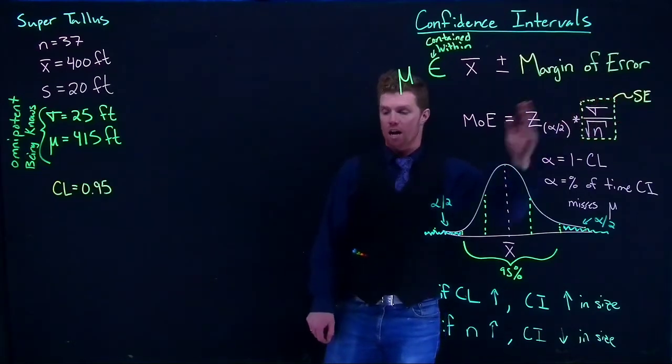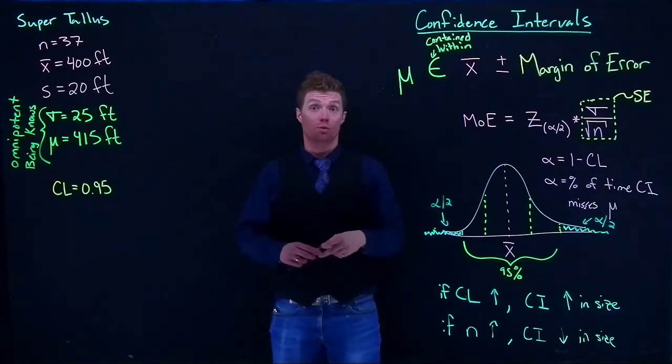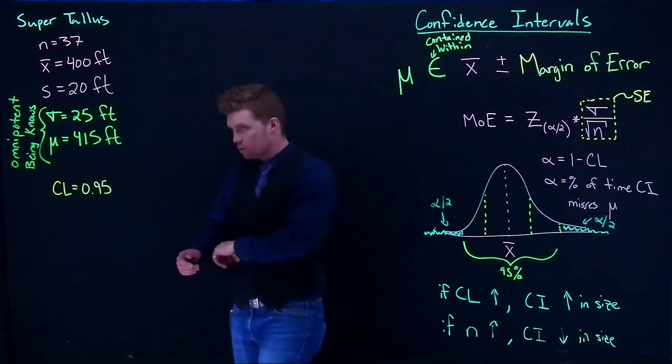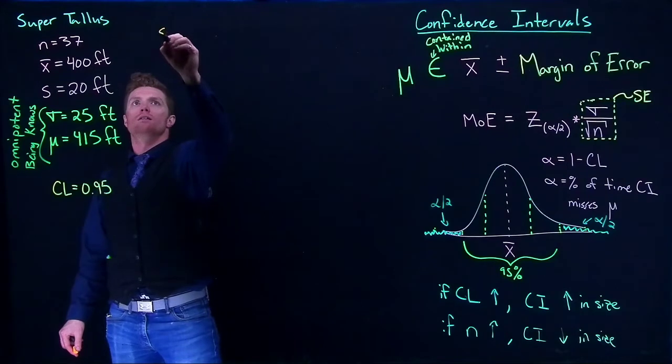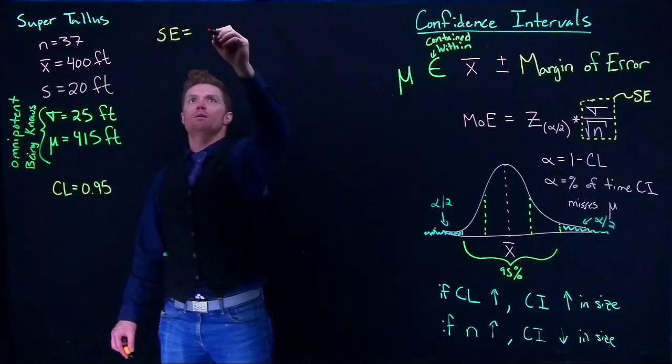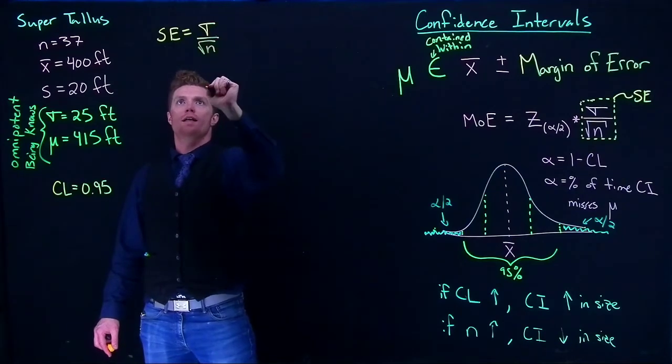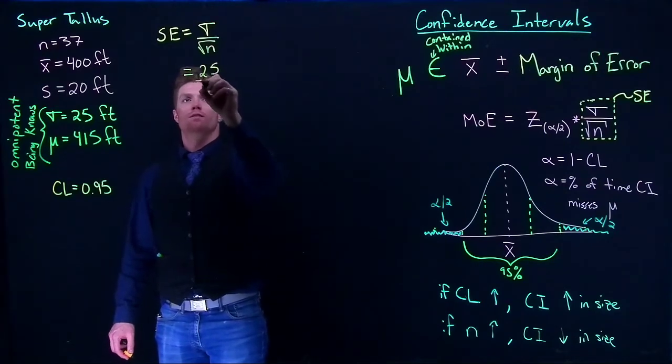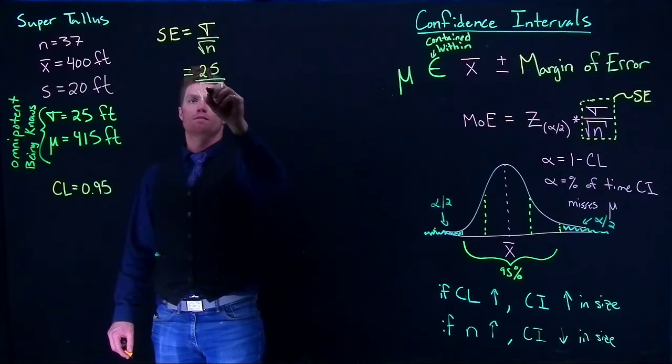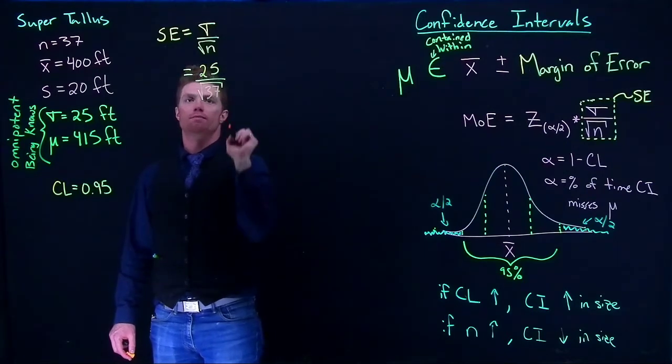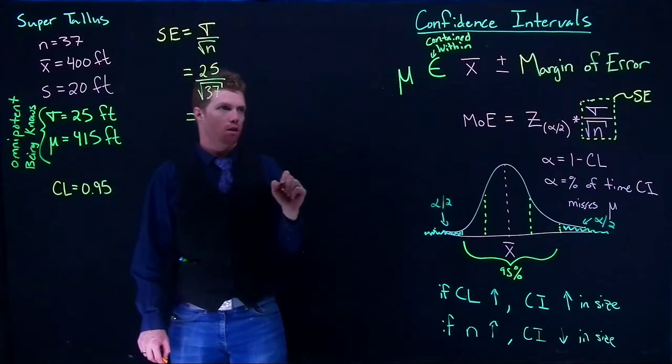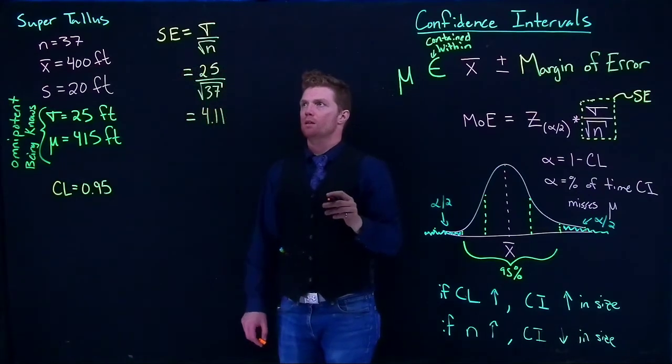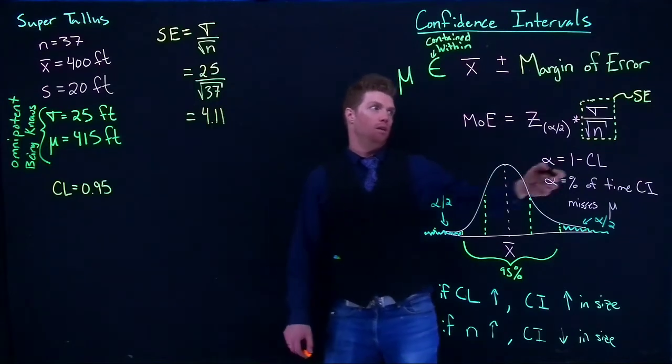So first things first. Let's calculate out our standard error. Because it's a simple calculation and we already know how to do this. We've been doing it before since we've been using our central limit theorem. Okay so our standard error is just going to be equal to sigma divided by the square root of n. Which is just going to be equal to our 25 feet divided by the square root of 37.